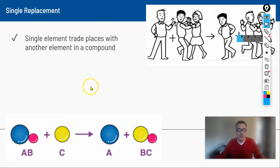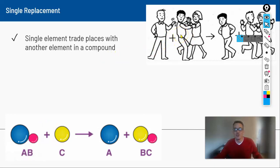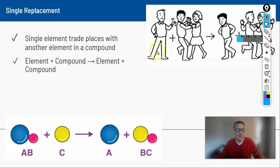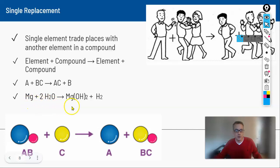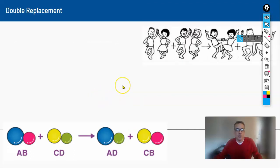The final two types are replacements. In a single replacement, an element replaces one of the elements in a compound — like someone cutting in and kicking another person out. We start with an element and a compound, and end up with a different element and a different compound. For example, magnesium reacting with water: the magnesium kicks out some of the hydrogen, leaving hydrogen by itself.